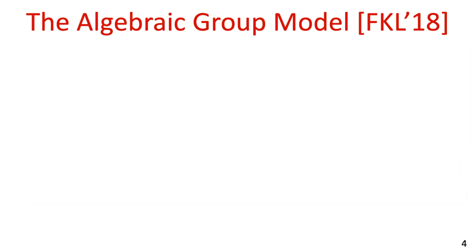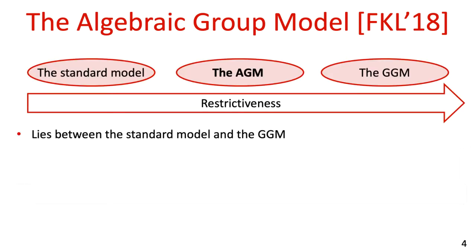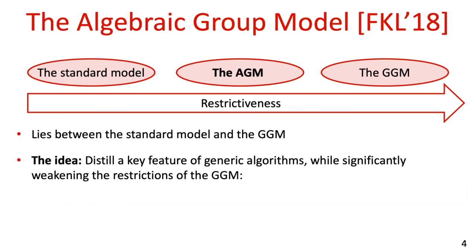With these limitations of the Generic Group Model in mind, Fuchsbauer-Kilton-Loss put forth the Algebraic Group Model, or the AGM for short. This model lies between the Standard Model and the Generic Group Model — it is more restrictive than the Standard Model, but assumes far less than the Generic Group Model. The main idea behind the AGM is to distill one key feature of generic algorithms which already allows for meaningful reductions between computational problems, while significantly weakening the other restrictions of the Generic Group Model.